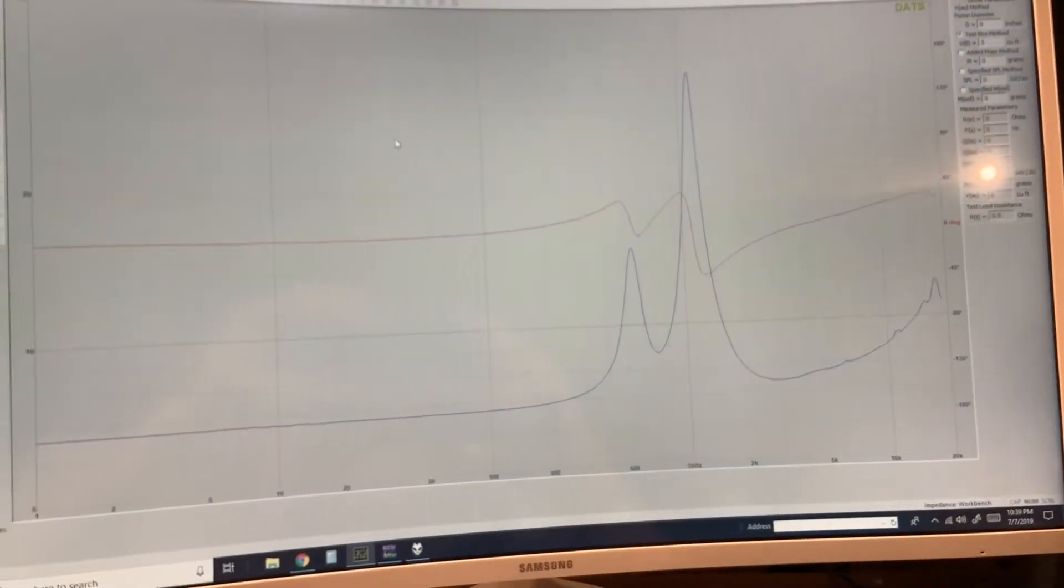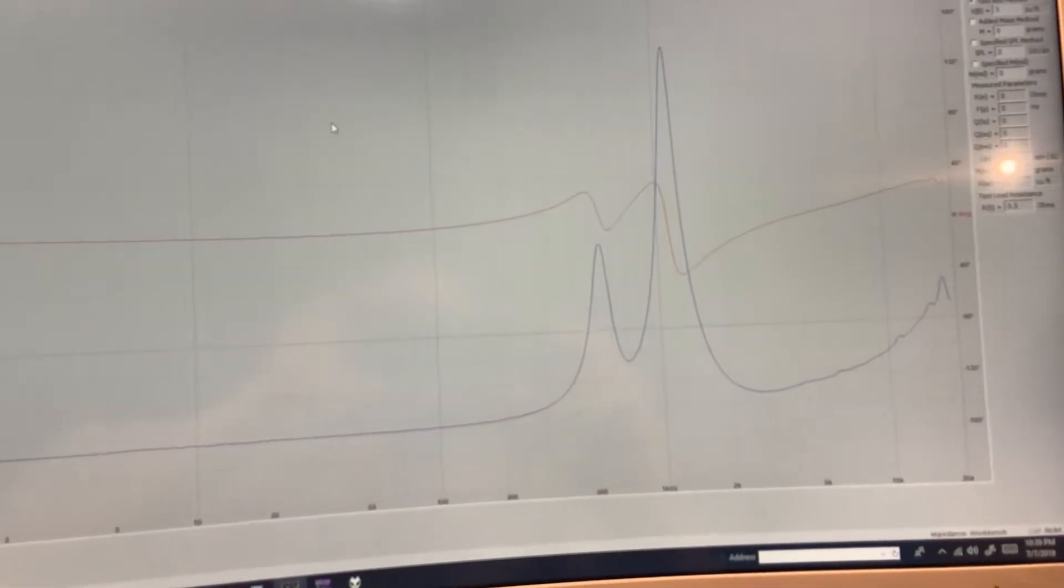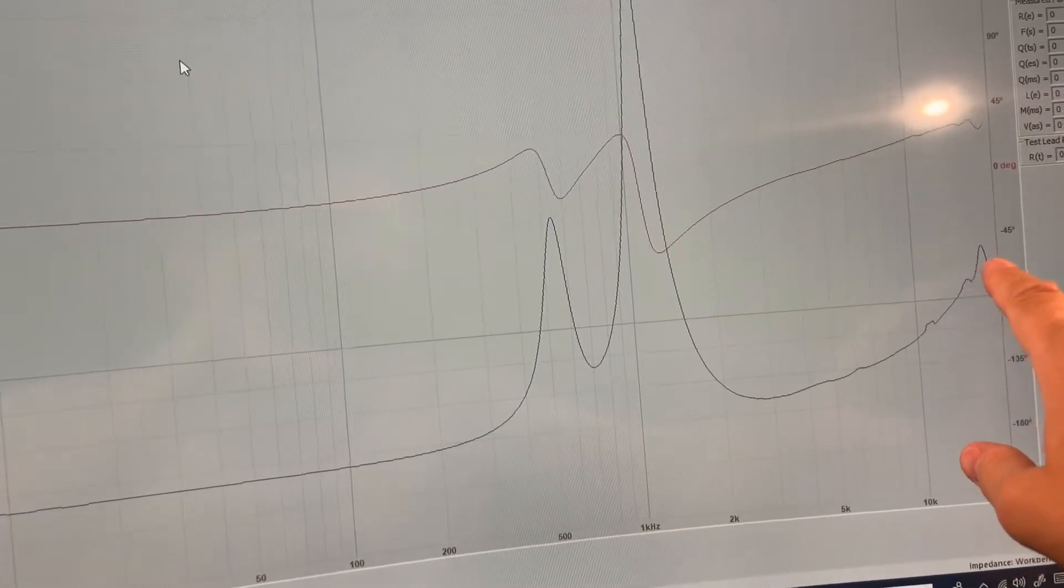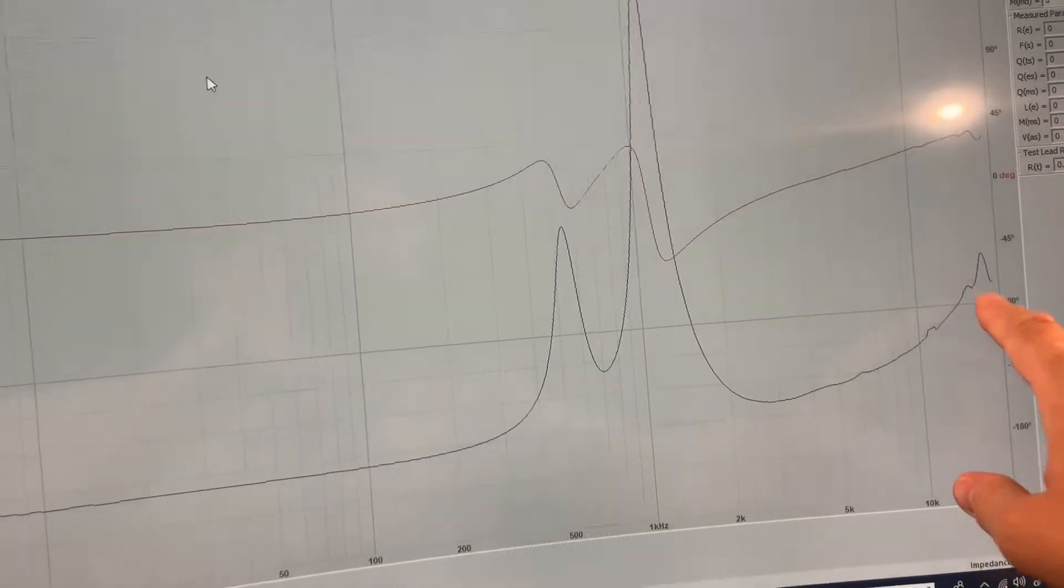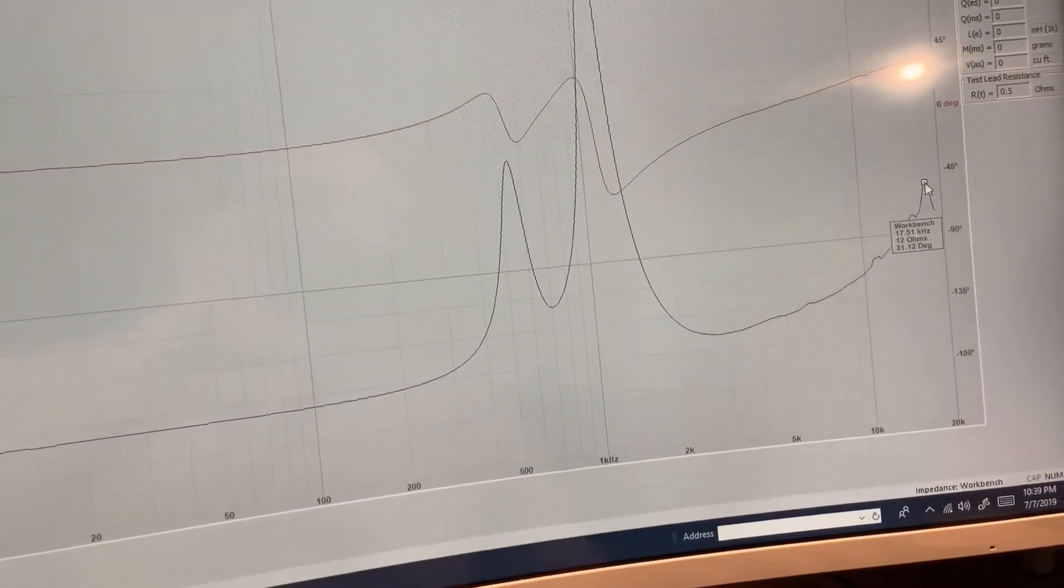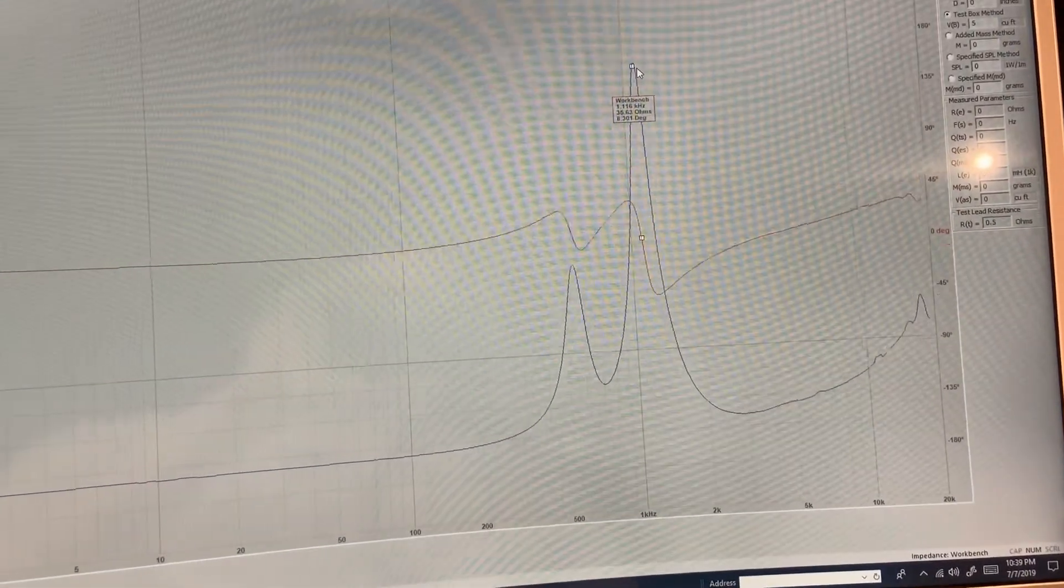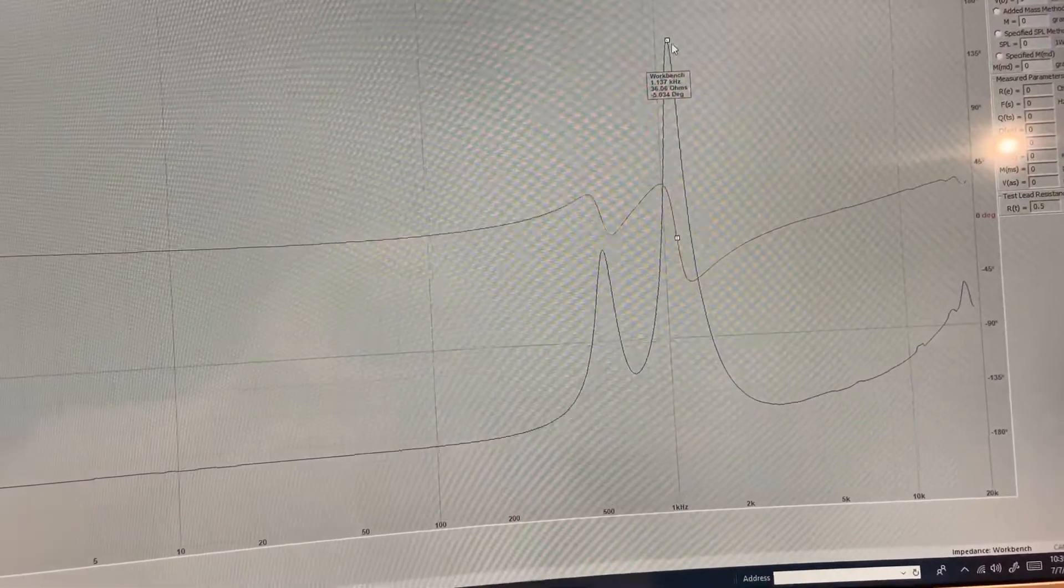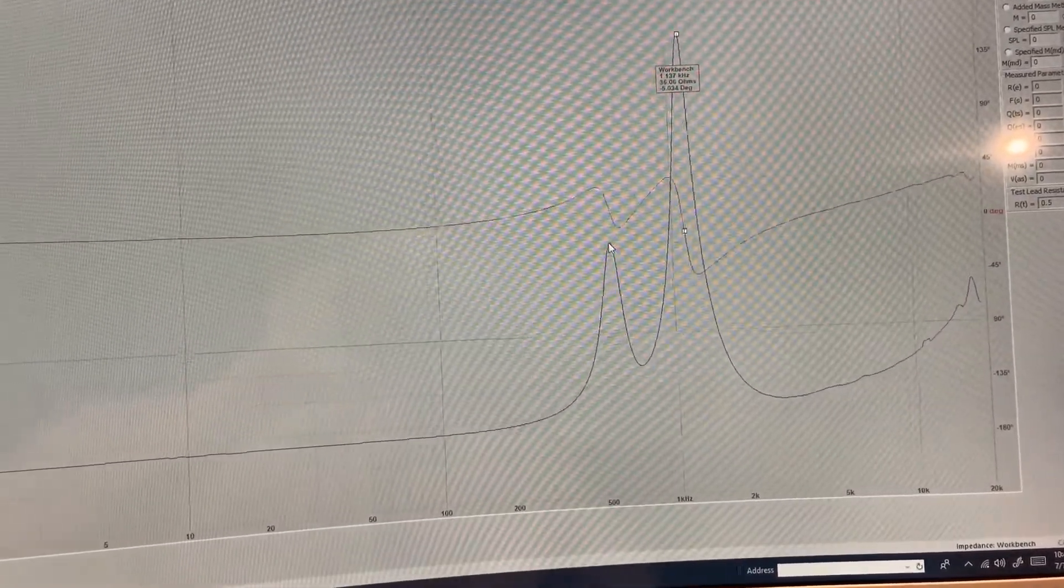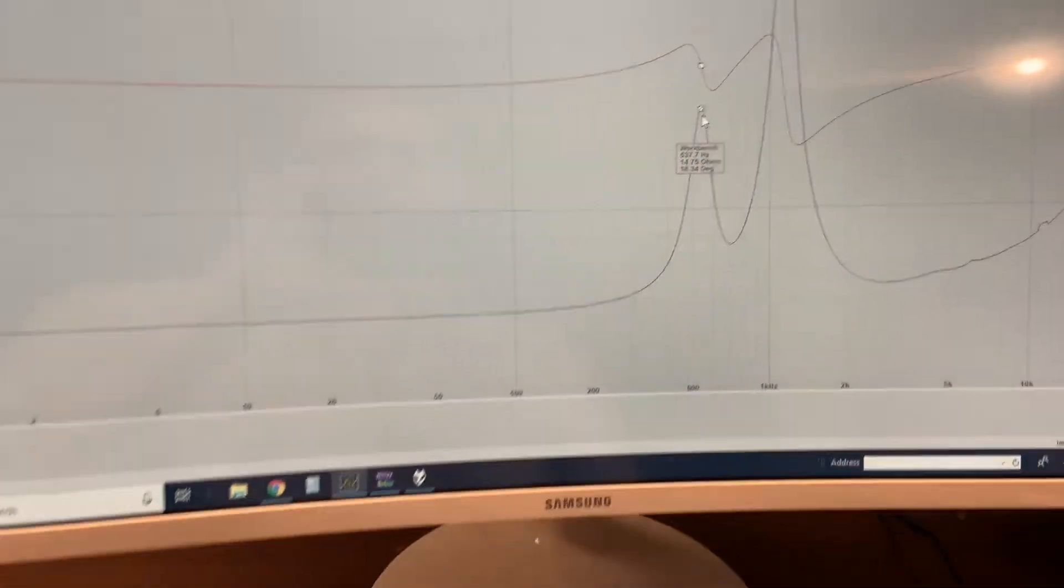So here we have the impedance curve data and you can see here there's actually some break up in the diaphragm up really high, this is at 17 and a half kilohertz. So just for memory's sake here we have a large resonance at 1.1 kilohertz and then the main diaphragm resonance is at 537 hertz.